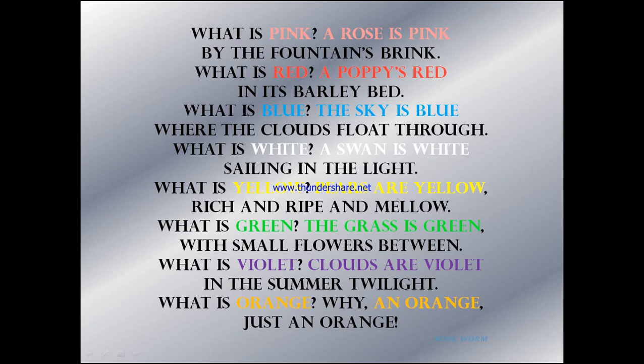What is yellow? Pears are yellow, rich and ripe and mellow. What is green? The grass is green with small flowers between. What is violet? Clouds are violet in the summer twilight. What is orange? Why an orange? Just an orange.